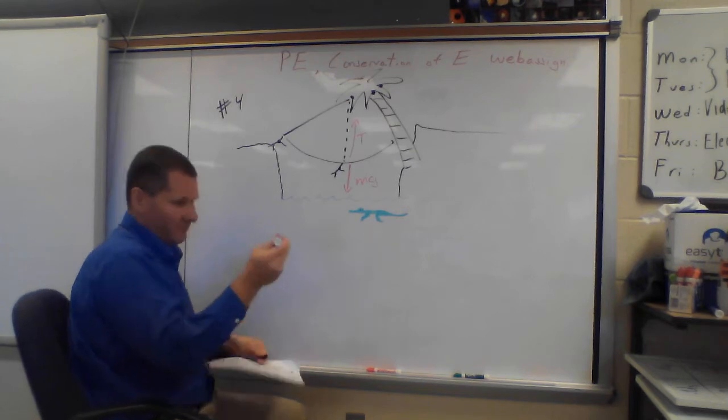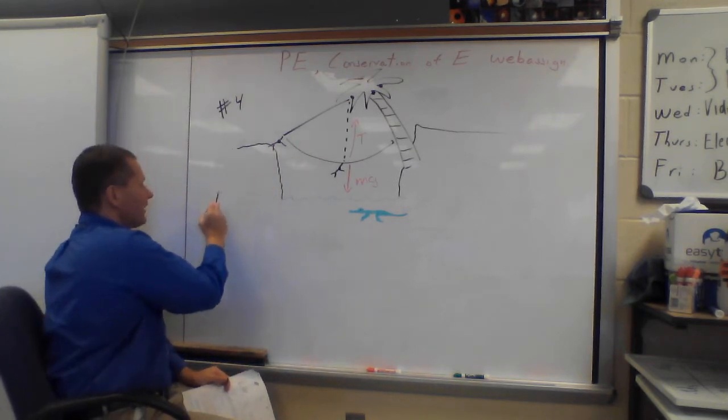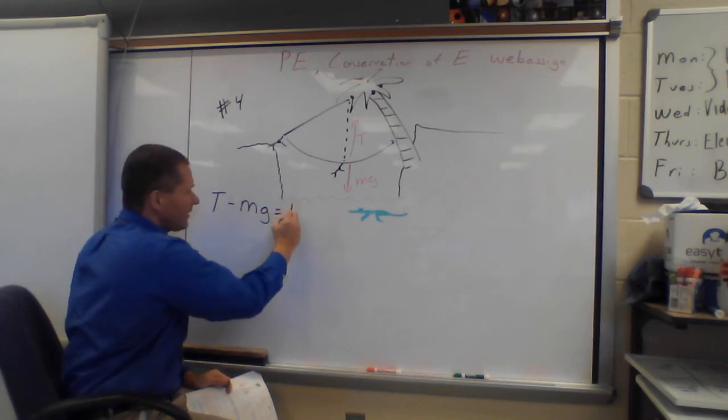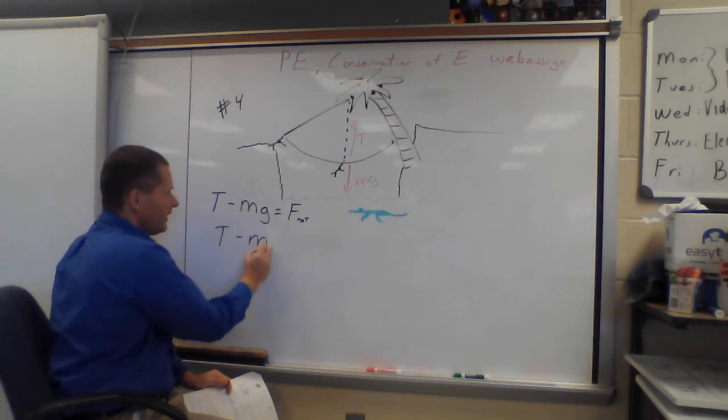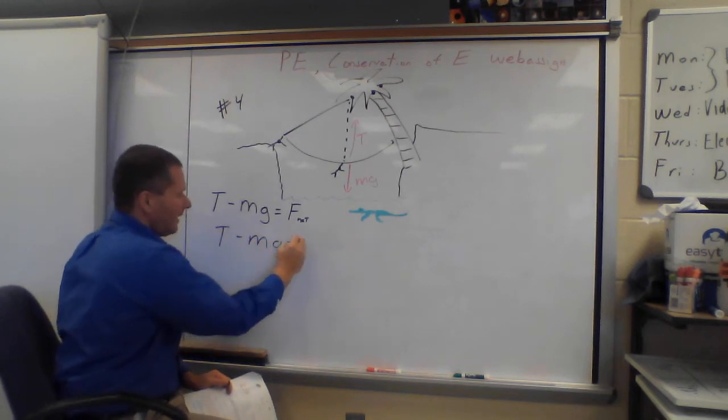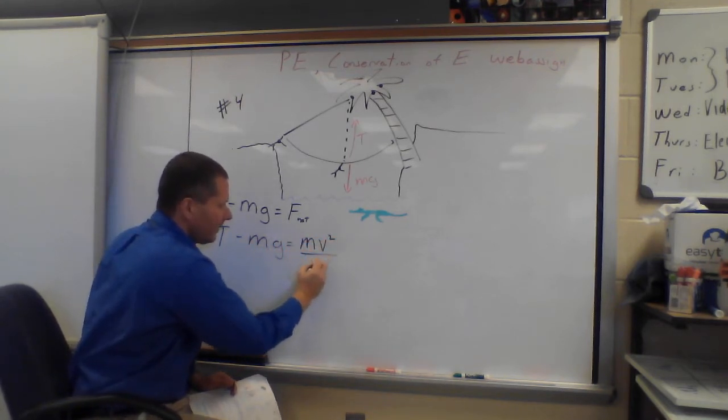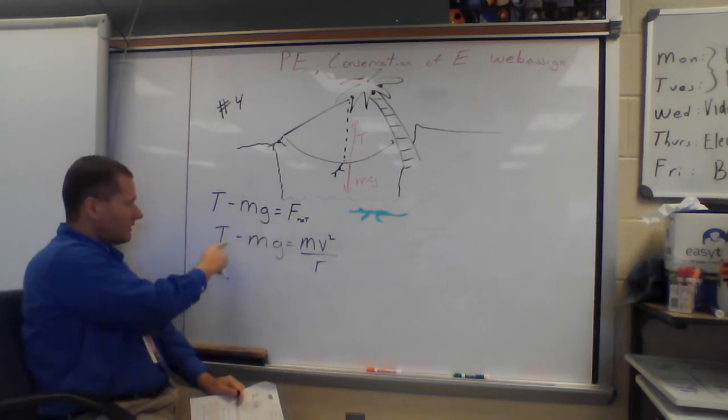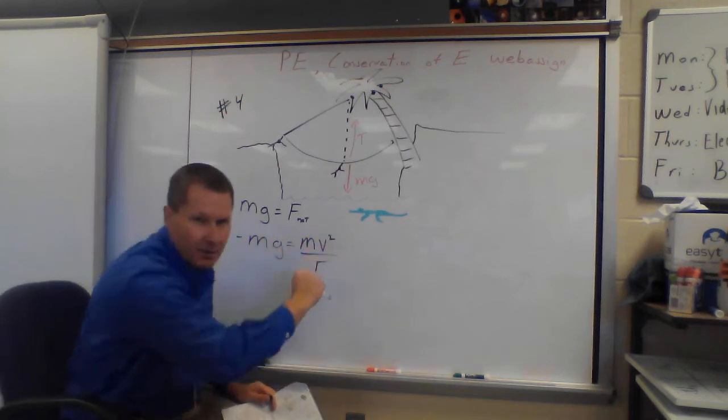So with just those two forces on him, and I'm going to call up the positive direction, I know that tension minus mg has to equal, let's call it, F net. Tension minus mg has to equal, well in this case, our net force is centripetal force, so I'm going to put mv squared over r. Now, I can't cancel out the m's? No, because there's no m there, so we can't do that. So let's just leave this for a minute, and let's go over here instead.